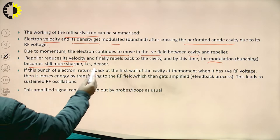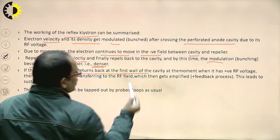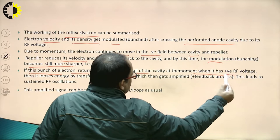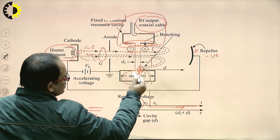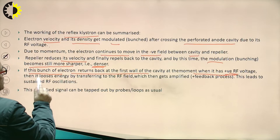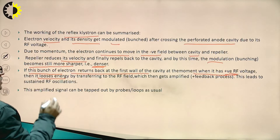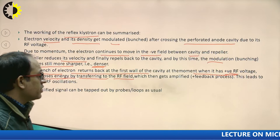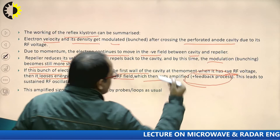When the electron beam gets reflected by the repeller, the bunching becomes more sharper compared to earlier — it becomes denser. If this bunch of electrons returns back at the first wall of the cavity when the cavity has a positive RF voltage, the bunching electron loses its kinetic energy by transferring it to the RF field. The energy gets transferred and amplified — this process is known as positive feedback, which leads to sustained RF oscillation.